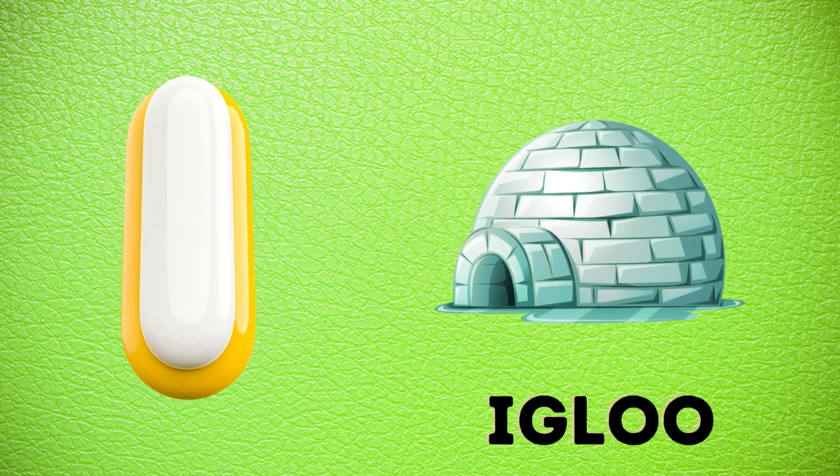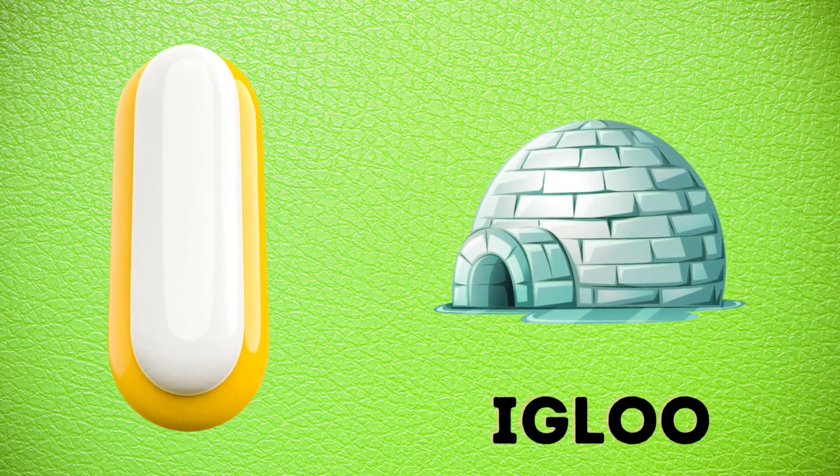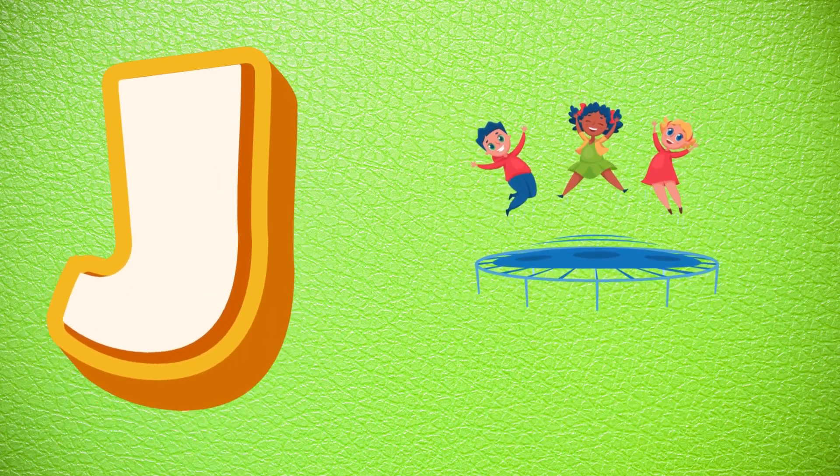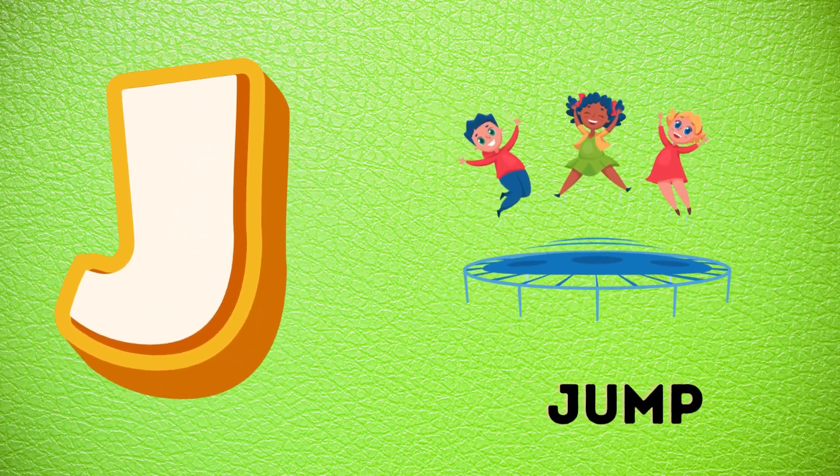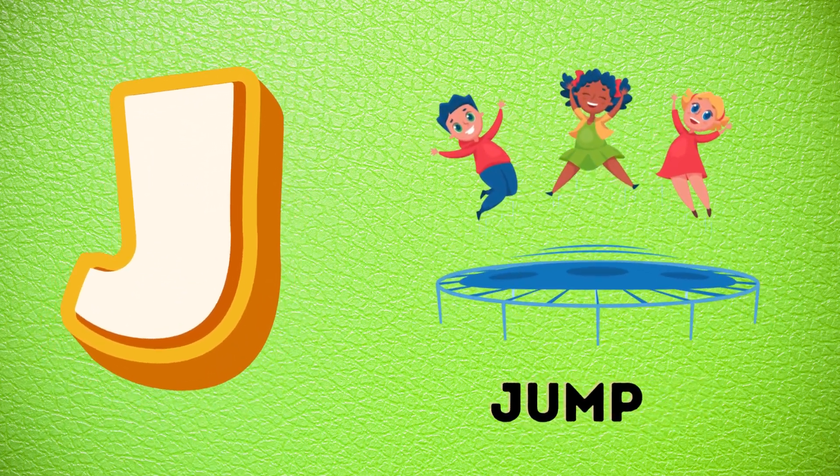I is for igloo, i-i-igloo. J is for jump, j-j-jump.